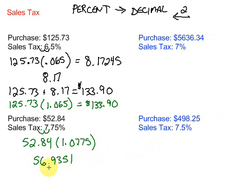Again, we need to round to two decimal places. So if we look here, this is the second decimal place. Look to the right. That's a 5. So this has got to go up. So we're going to end up with $56.94. That would be the price we would pay for a purchase of $52.84 with a 7.75% sales tax.